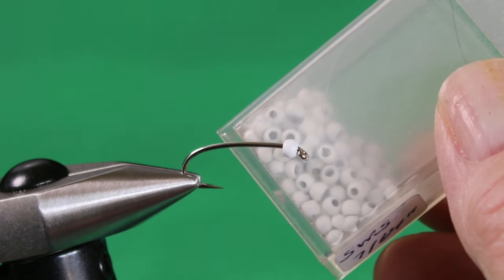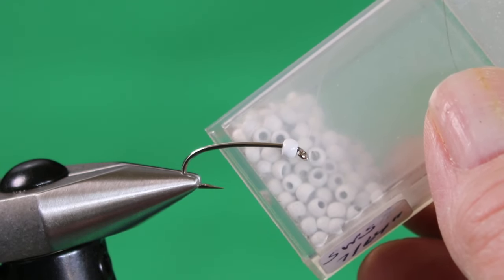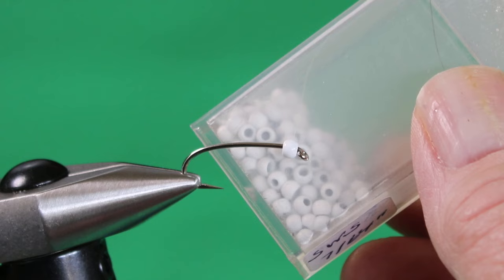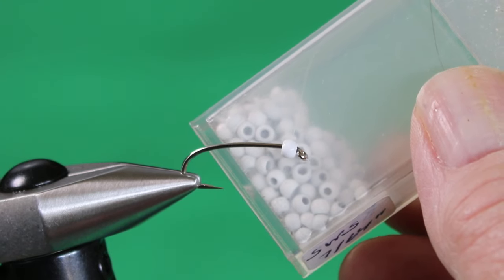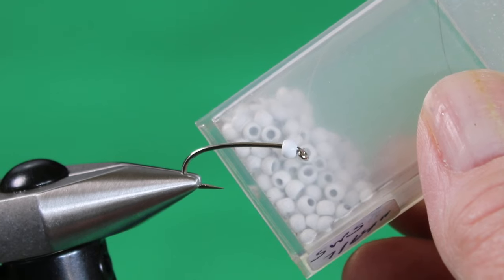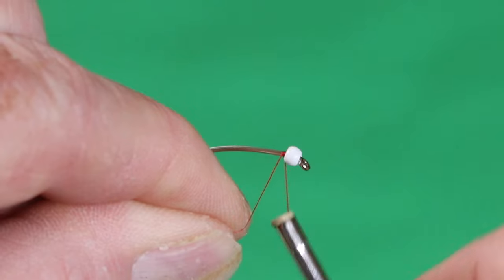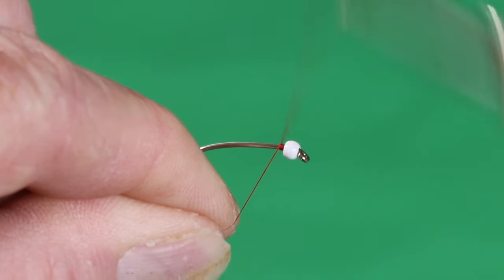For the size 10s, I'd use 7/64. For the 9, 7/64. You could tie this on a Daiichi 1760 size 10. And for 12s, I would use the 3/32, or a size 11 would be 3/32. We're just going to get that thread started right behind the bead.